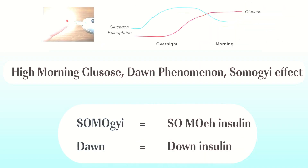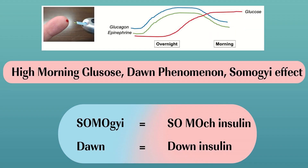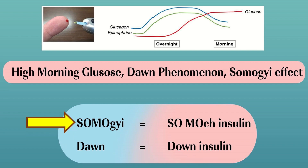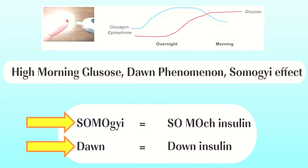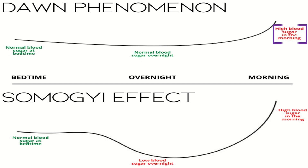The treatment is to reduce the evening dose of NPH. To remember this: the Somogyi effect is due to too much insulin. In contrast, dawn phenomena is due to lower insulin. In dawn phenomena there is also morning hyperglycemia, as in the case of Somogyi effect.